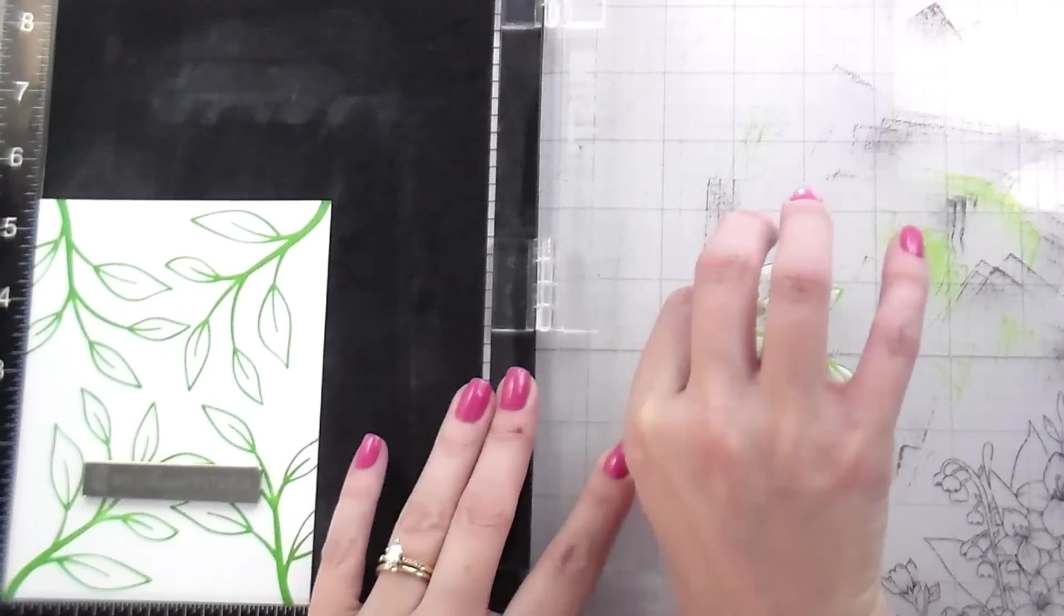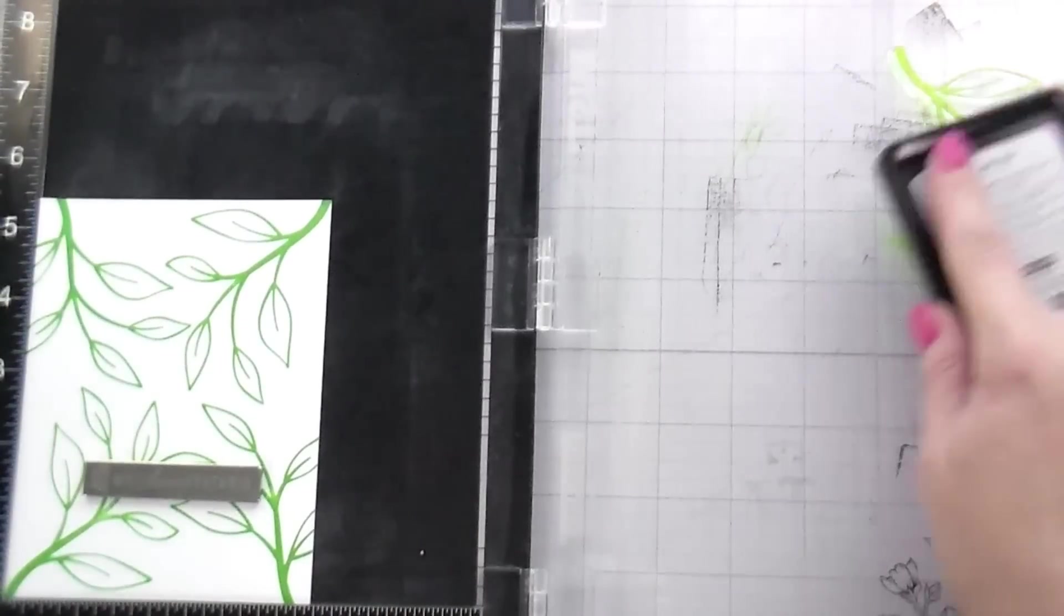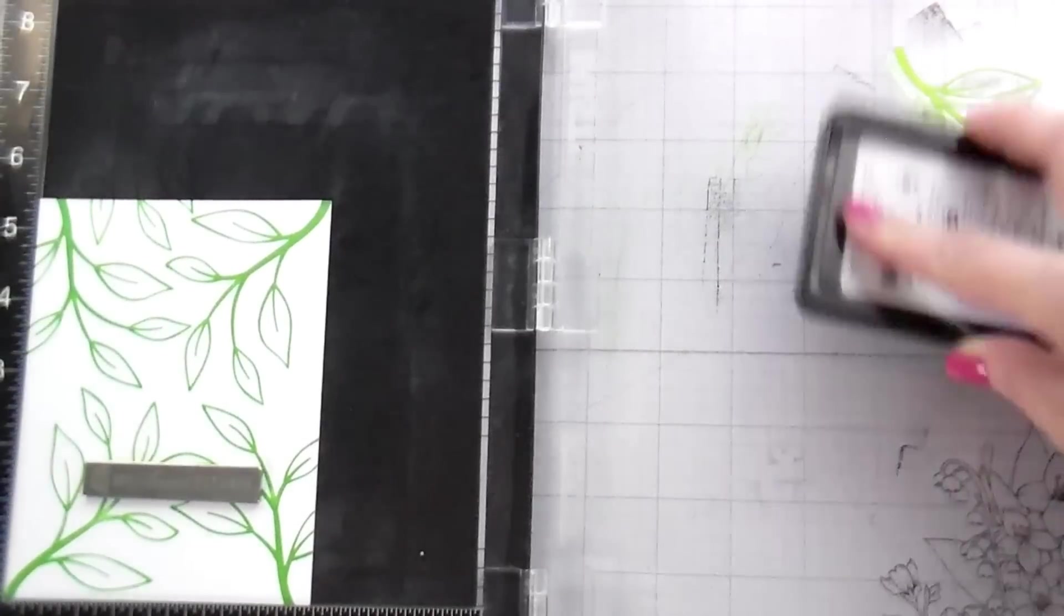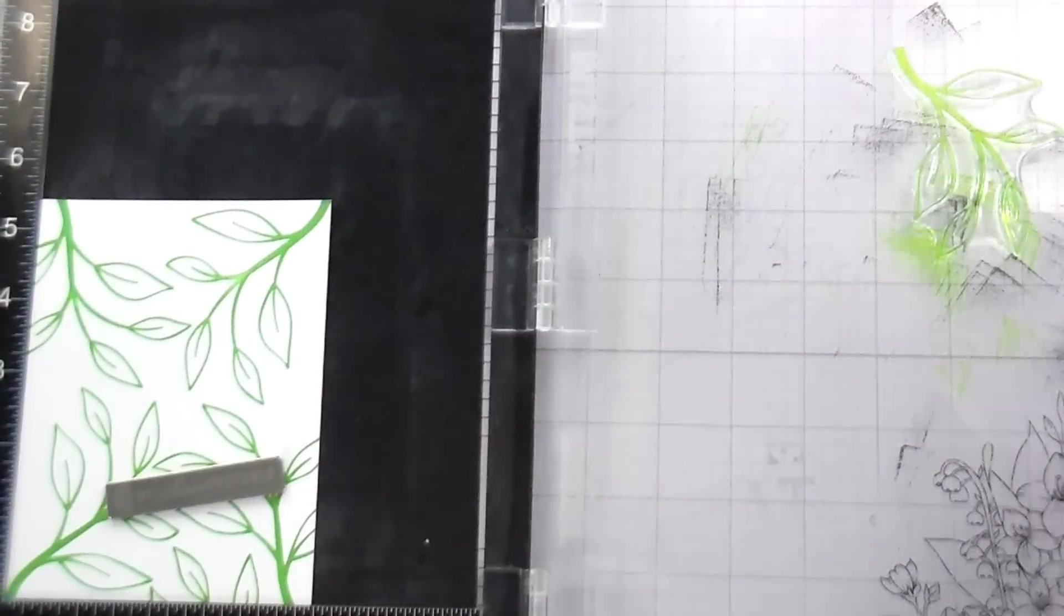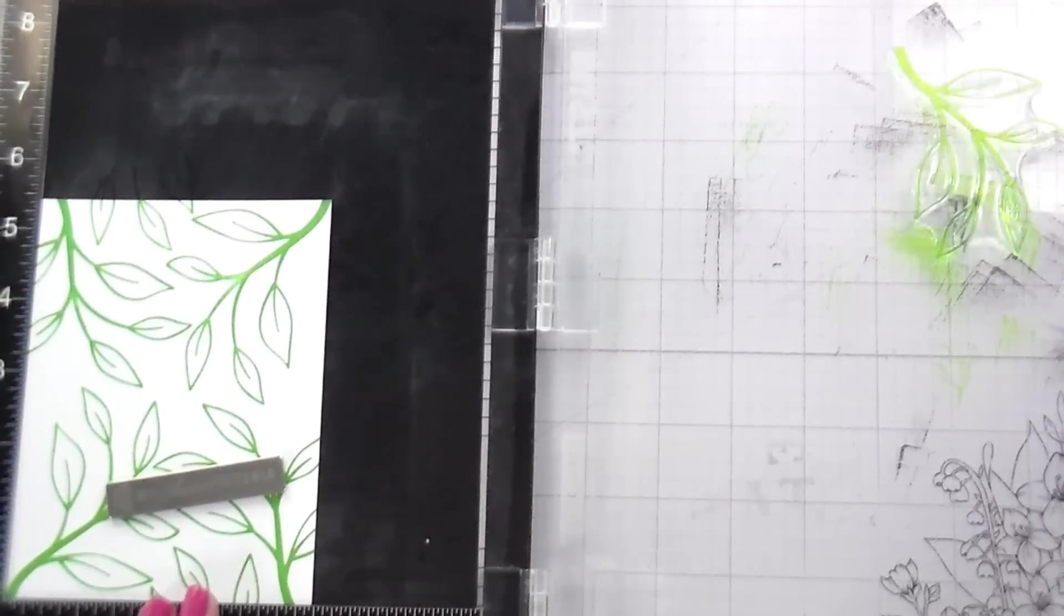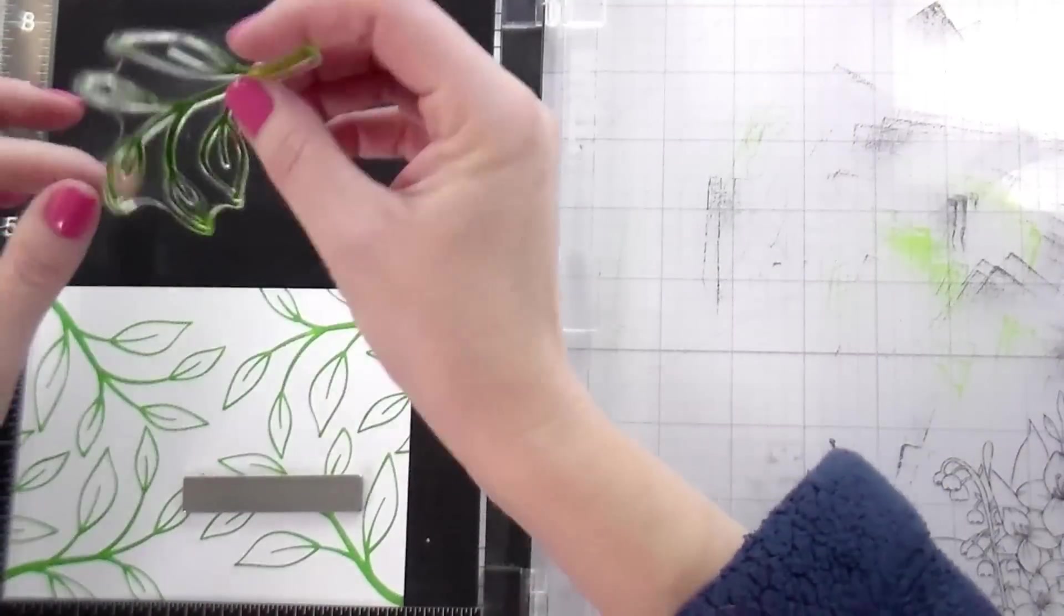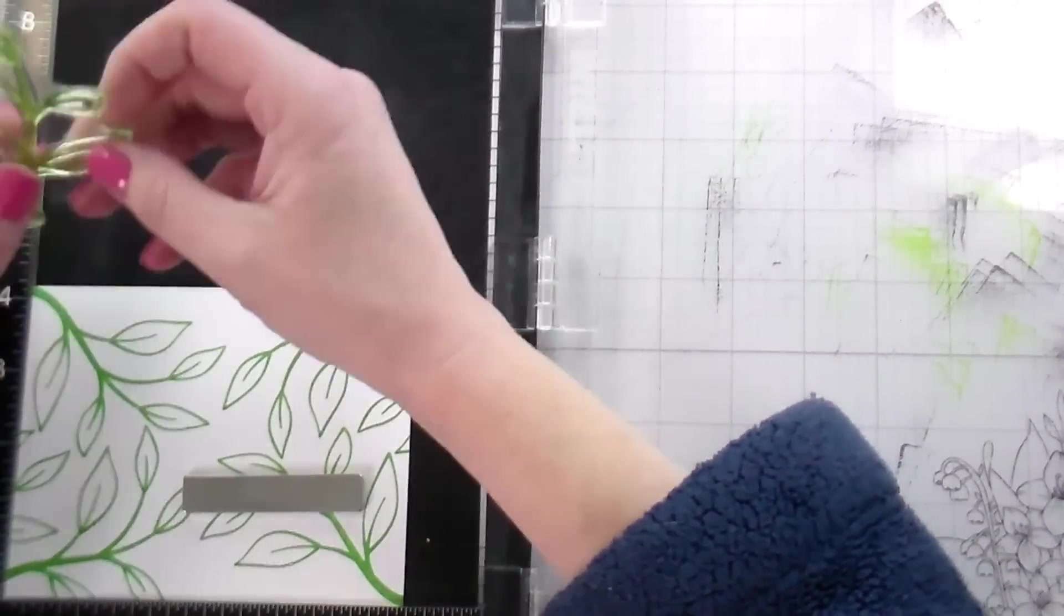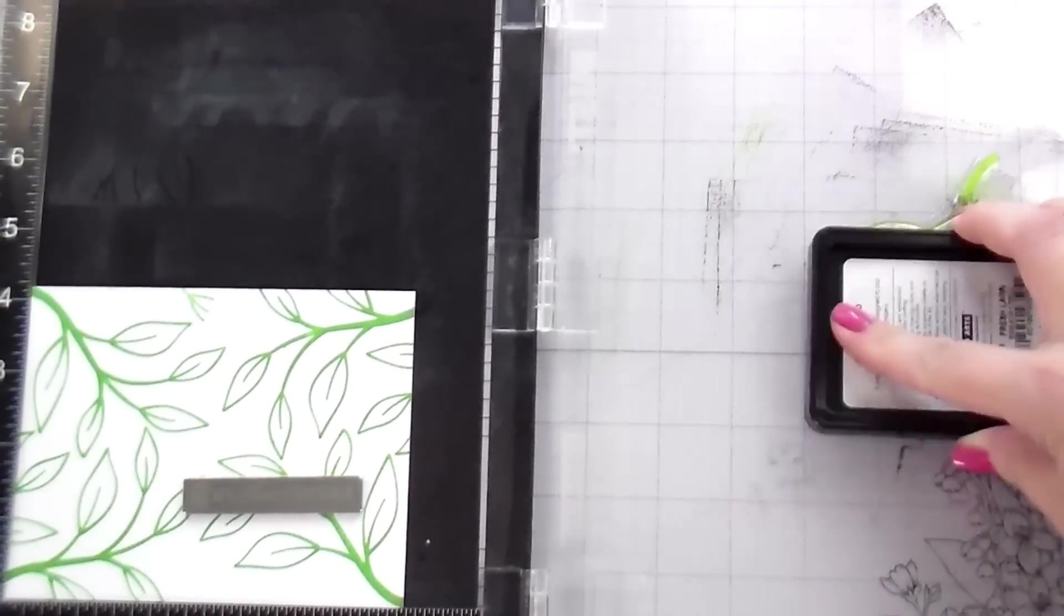So now we have the four that are done. Now I'm going to start stamping the leftover areas. So the stamp is going to hang off. This is what I'm talking about when I'm talking about a continuous print that you want it to kind of just feed off the edge of the page as if there is a continuation of this pattern going on elsewhere. And it's just going to help give it more of that kind of like pattern paper look.